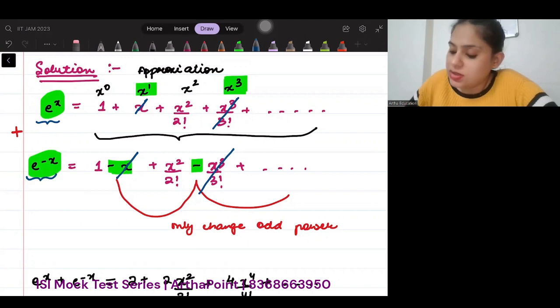And what is going to happen? This is going to become twice. So, 1 plus 1, I will get 2. And then, these two added together, I will get 2x squared by 2 factorial.